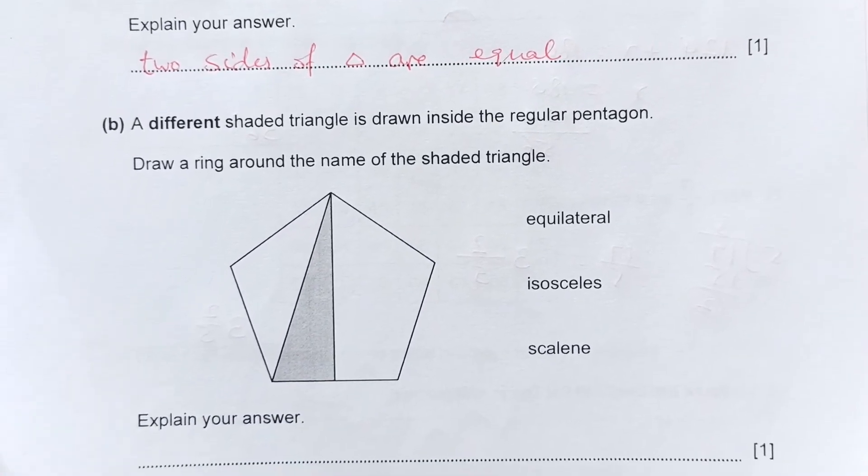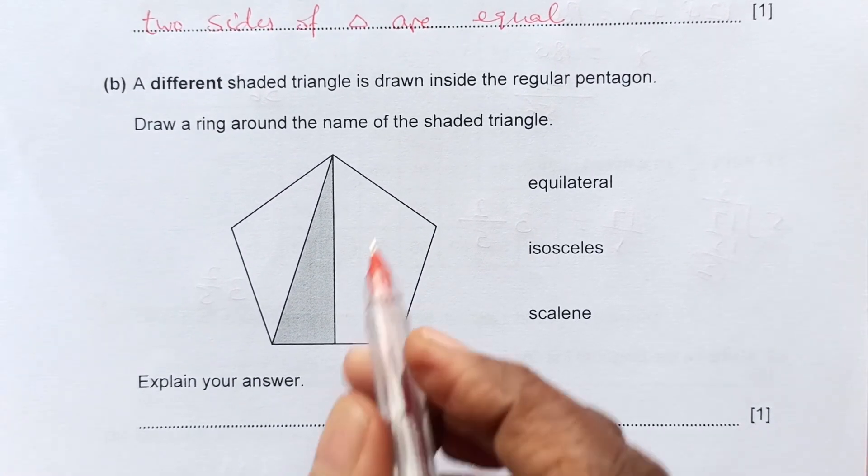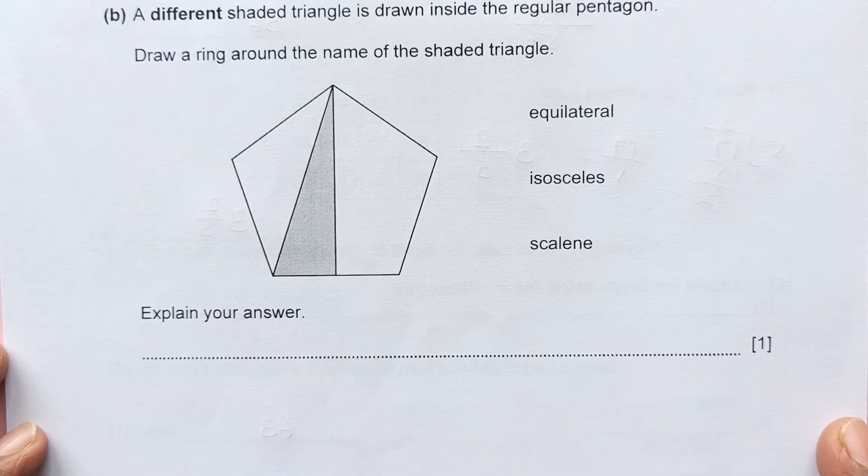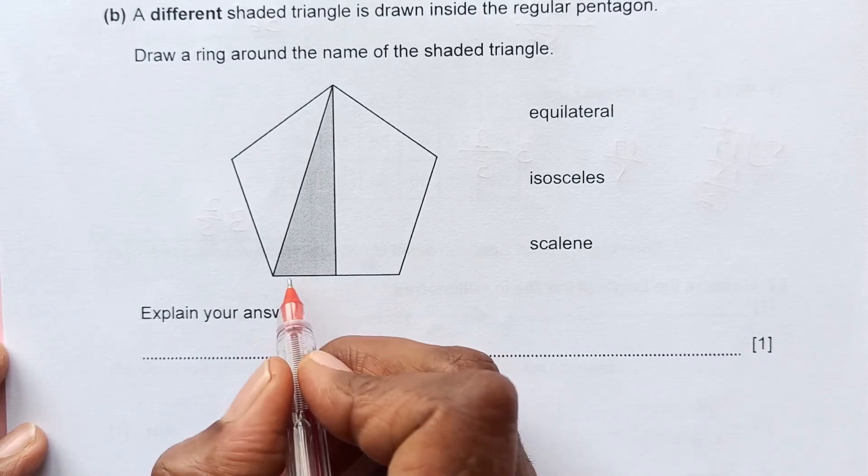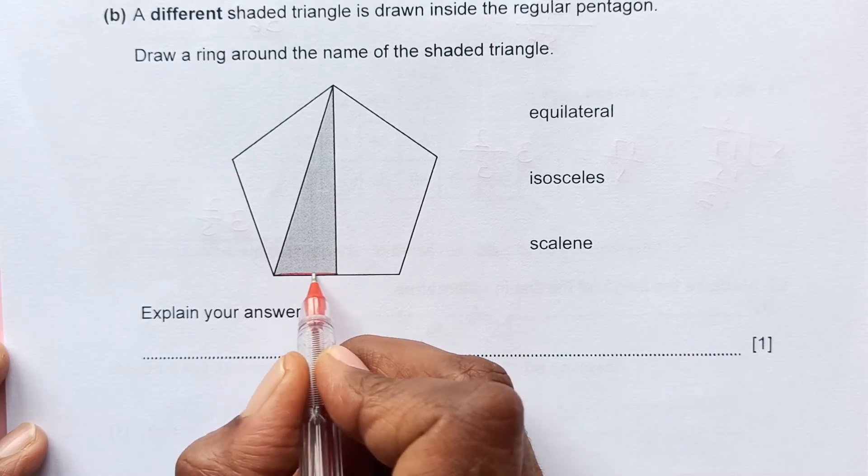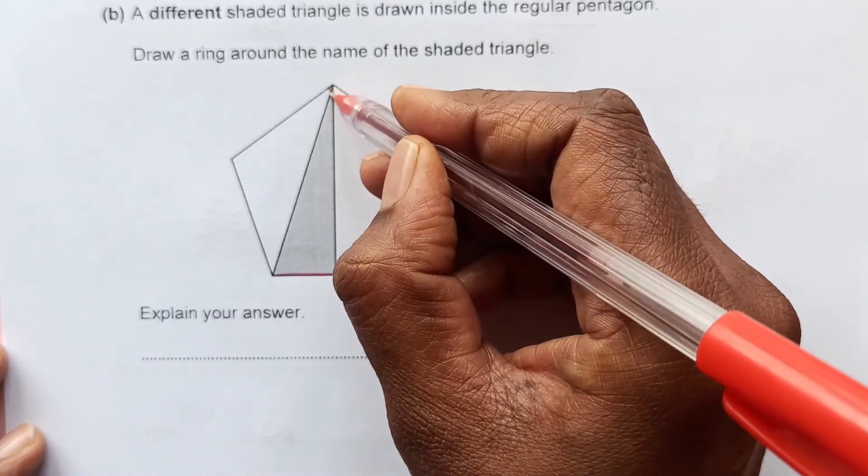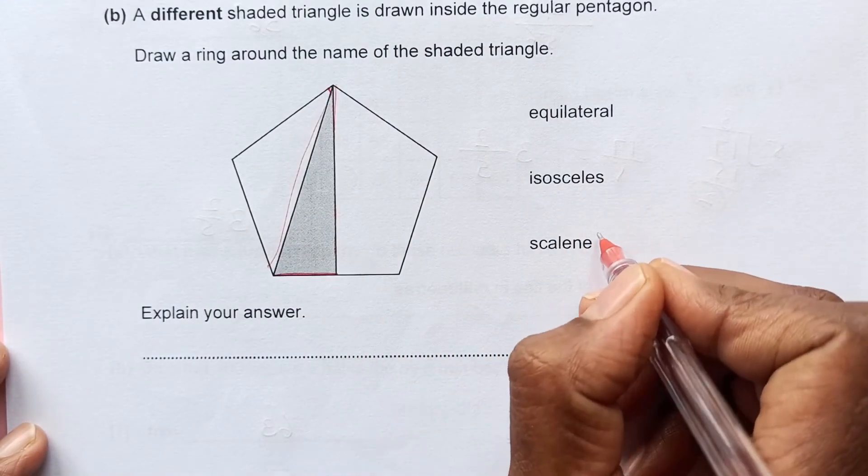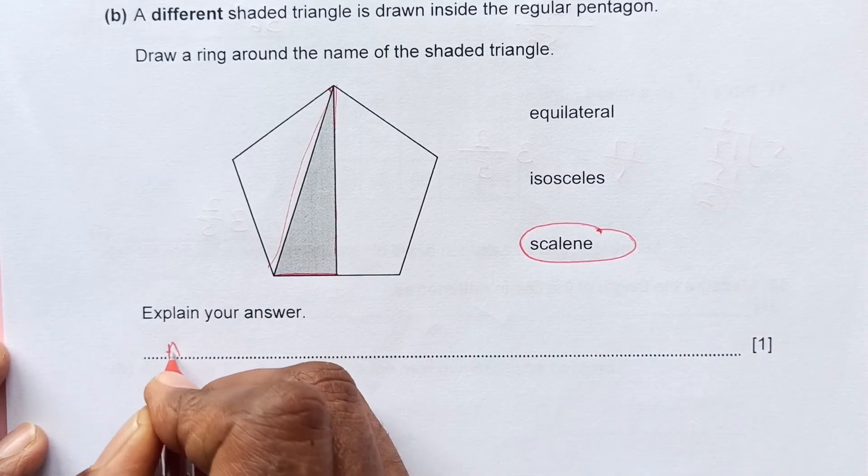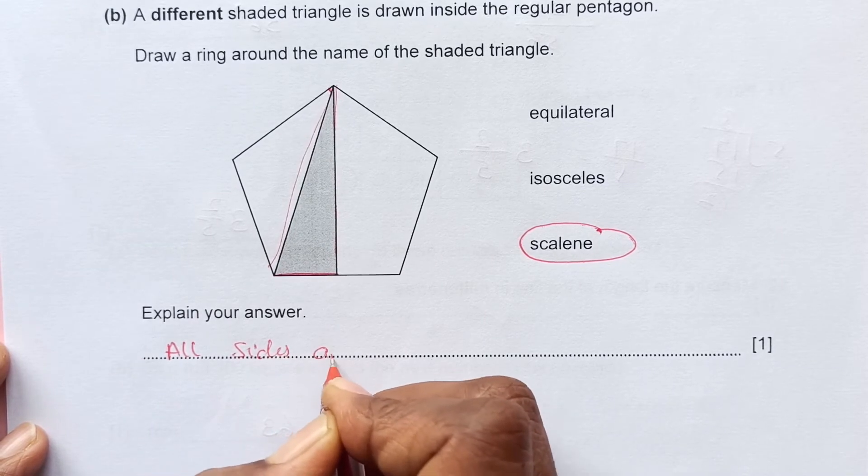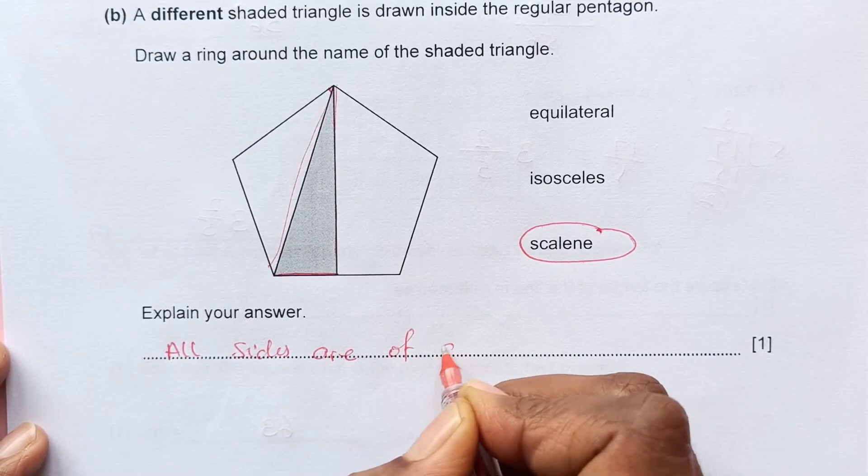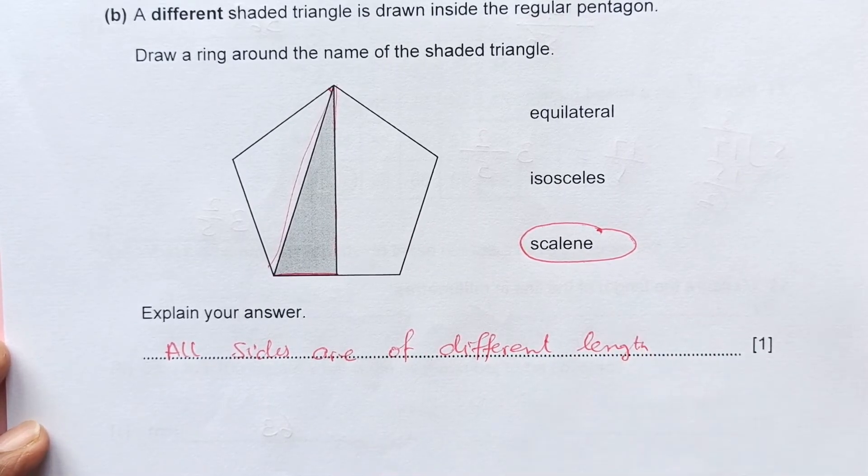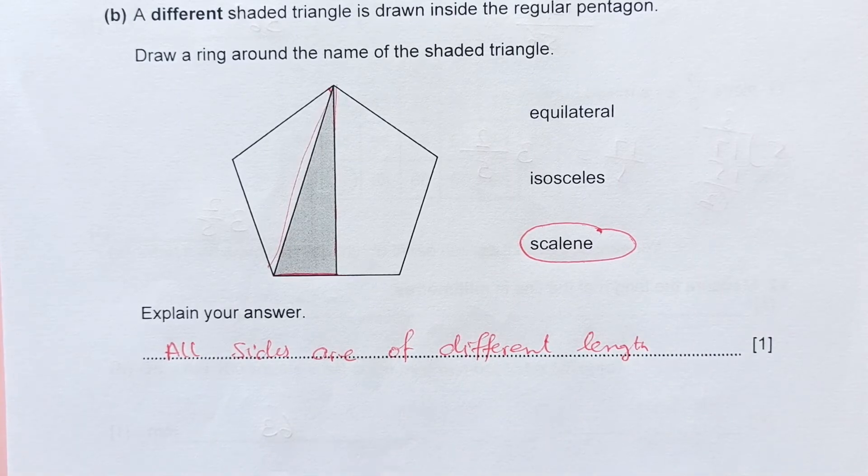Part B. A different shaded triangle is drawn inside the regular pentagon. Draw a ring around the name of the shape of triangle. Explain your answer. Now this is a pentagon, but we don't know if this is half or not. All three sides are actually different. So this is a scalene triangle. Why is it a scalene triangle? Because all sides are of different length.